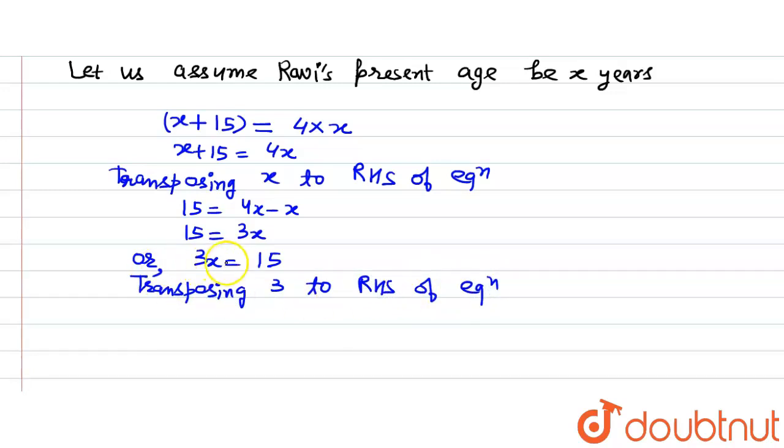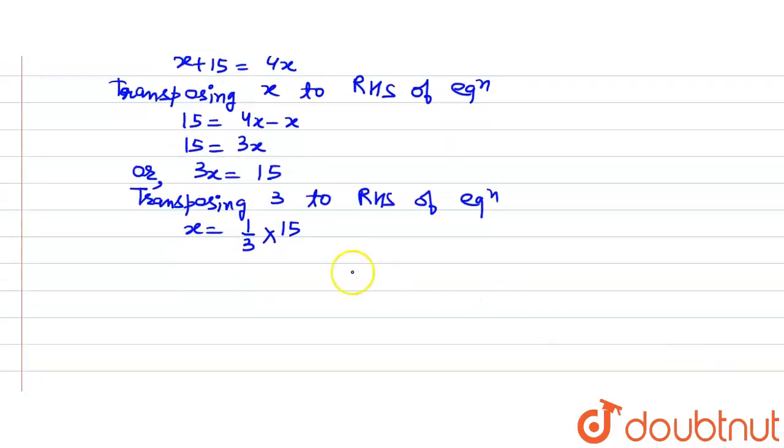Now 3 is getting multiplied here, so it will be getting divided there. So we will get x is equal to 1 divided by 3 multiplied by 15. And now we know that 3 into 5 is 15, so x will be equal to 5.